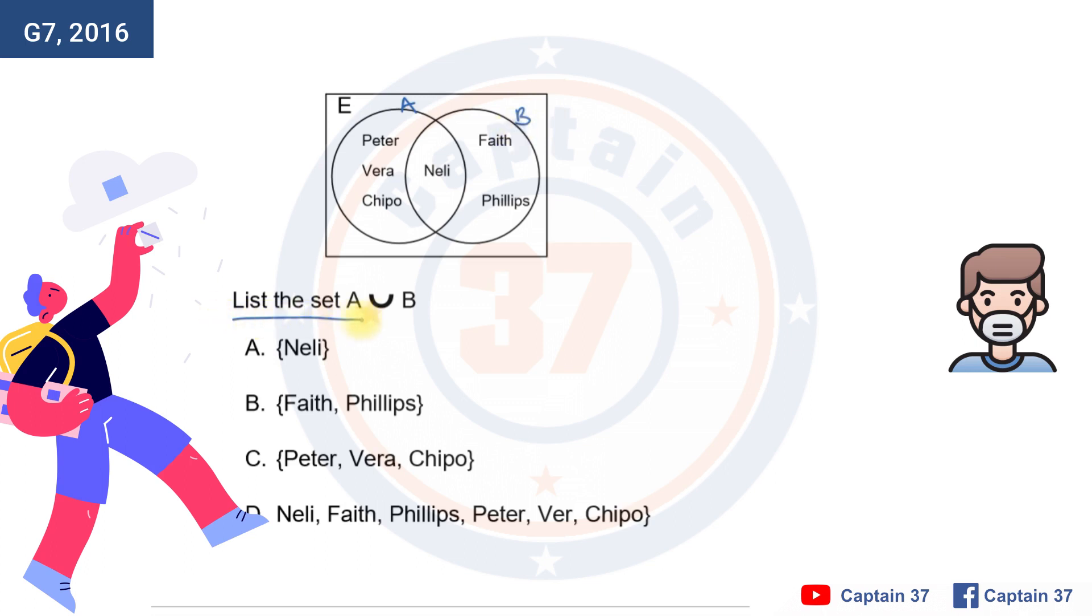List the set A union B. We need to list the set items that make up A union B. Now, in A, we know that the elements that are in A, there's Peter, there's Vera, and there is Chippo.